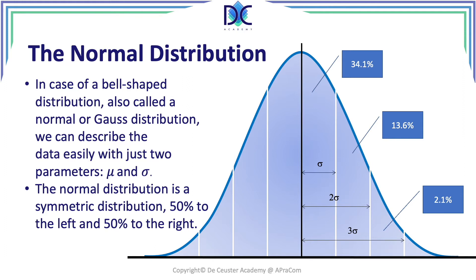Between one sigma and two sigma we find 13.6 percent, and between two and three sigma we find 2.1 percent. It means that from the average plus one sigma at the left-hand side we have 84.1 percent, and 15.9 percent to the right of the average plus one standard deviation.